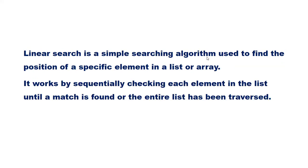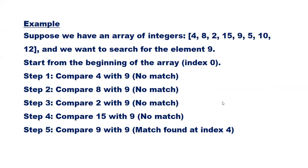Linear Search is a simple searching algorithm used to find the position of a specific element in a list or array. It works by sequentially checking each element in the list until a match is found or the entire list has been traversed.